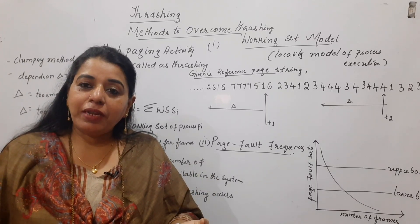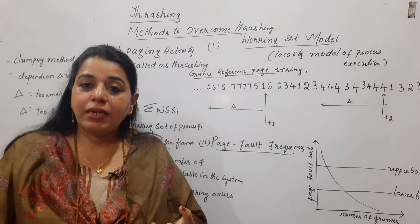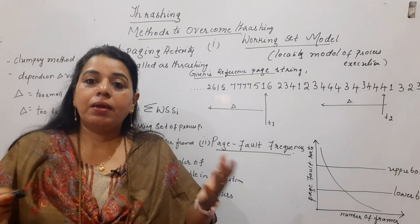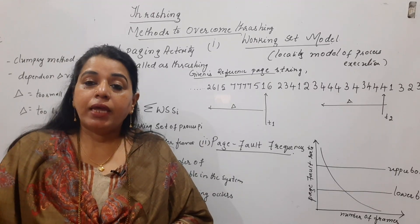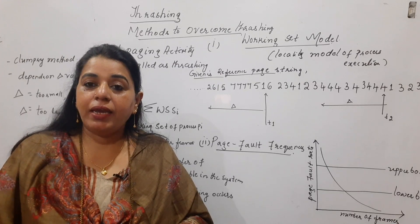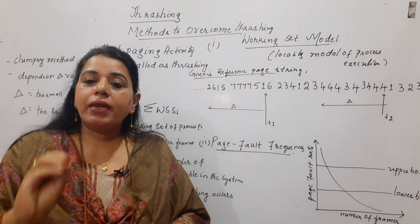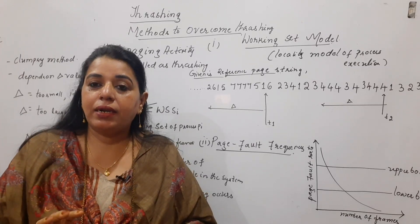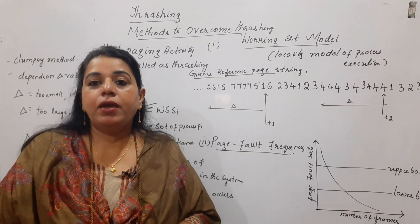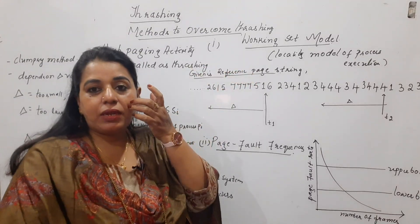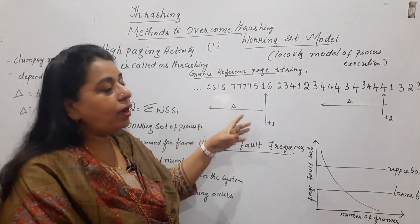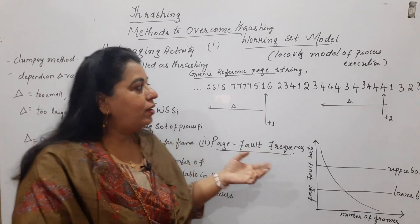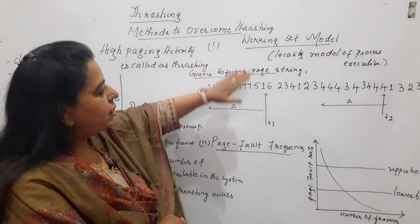But can we give as many frames as a process needs? Because main memory is of limited size and there are many processes being executed. You have to decide, by some mechanism, at least what is the minimum number of frames that can be allotted to a process so that it will not result in frequent page faults. For that, this is the method — the working set model.